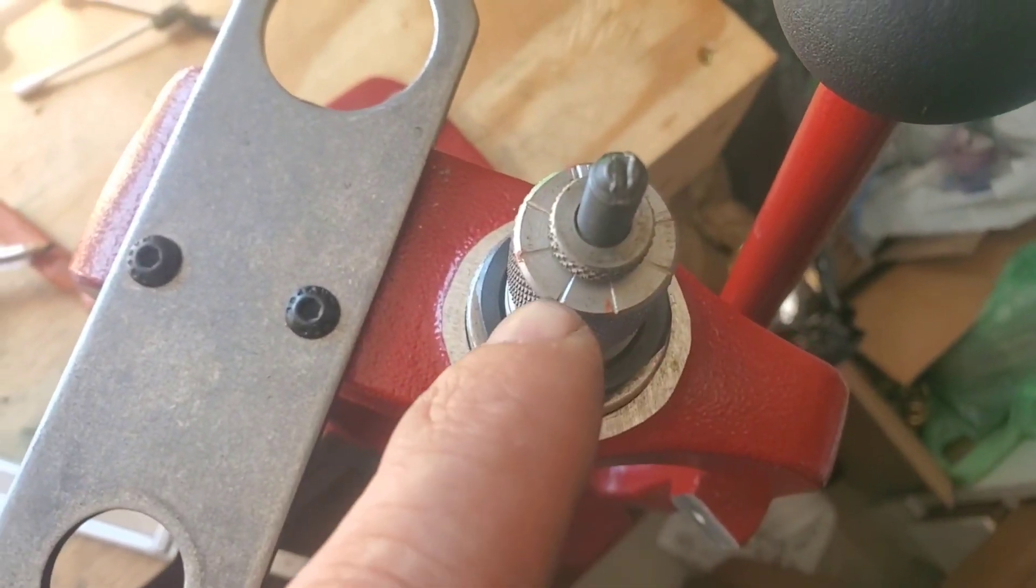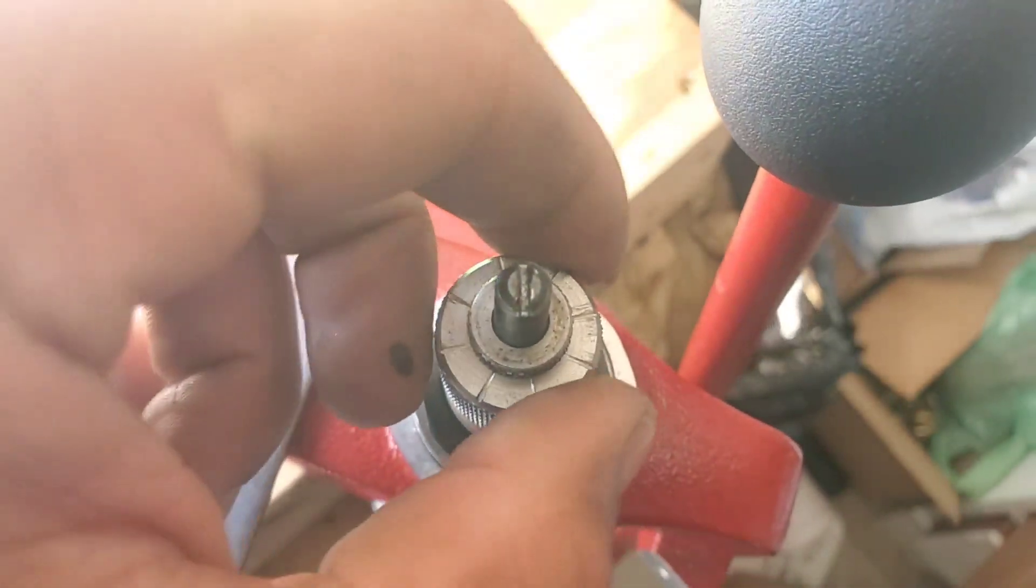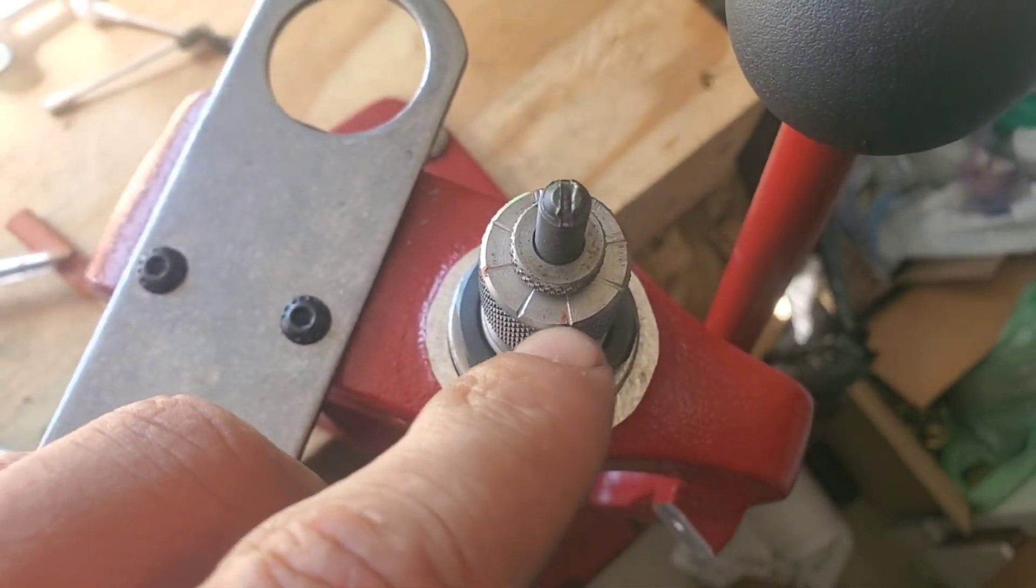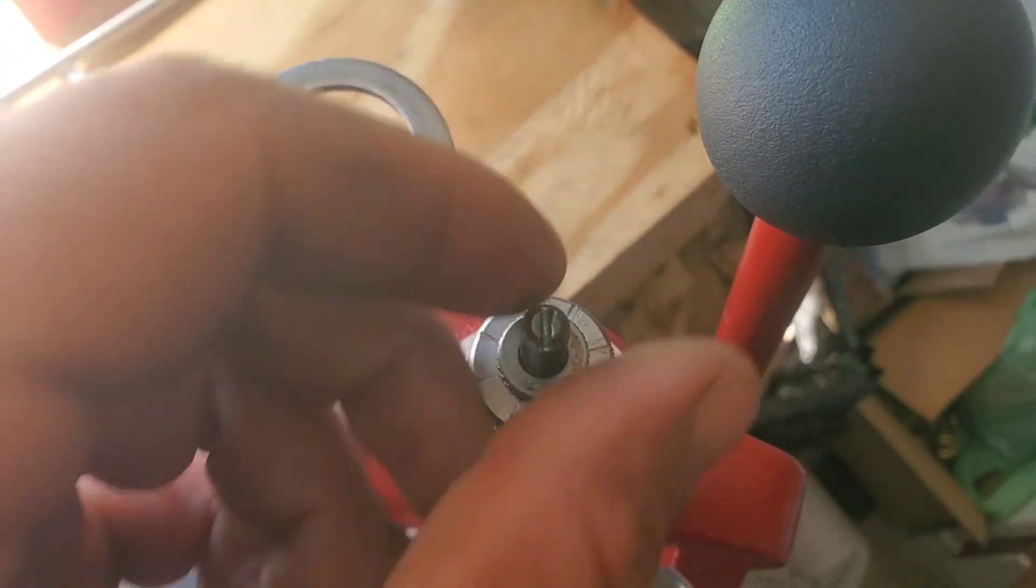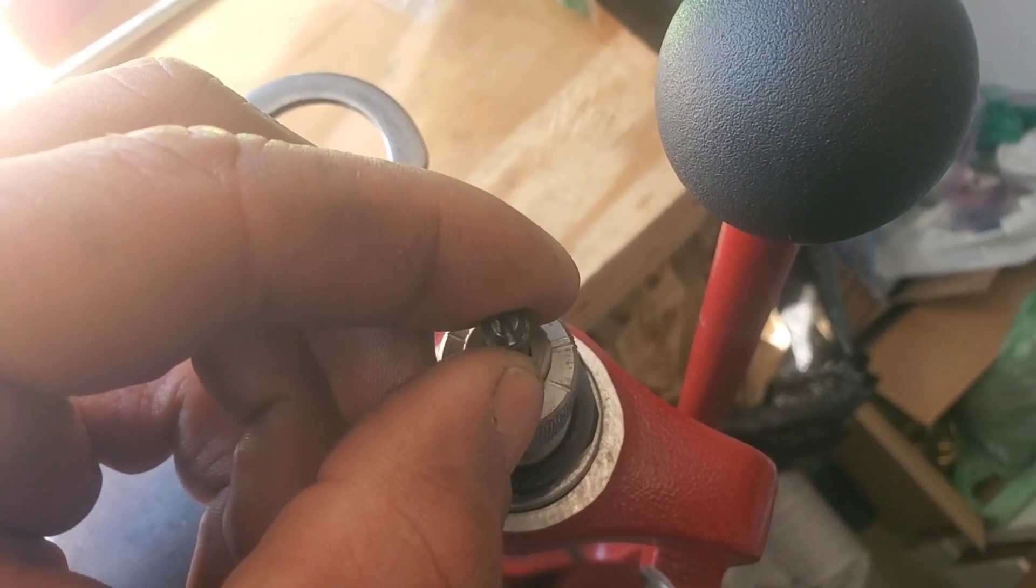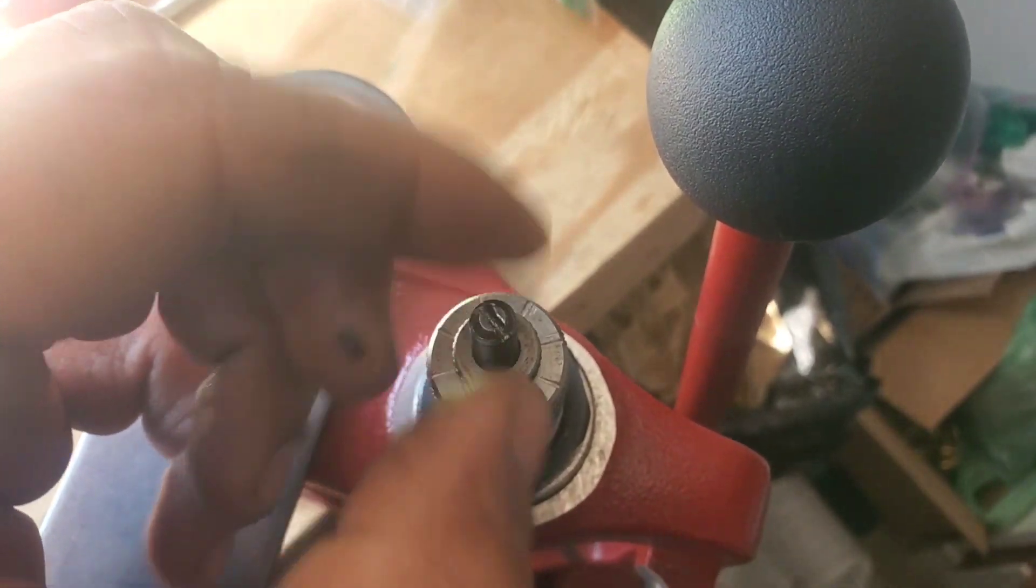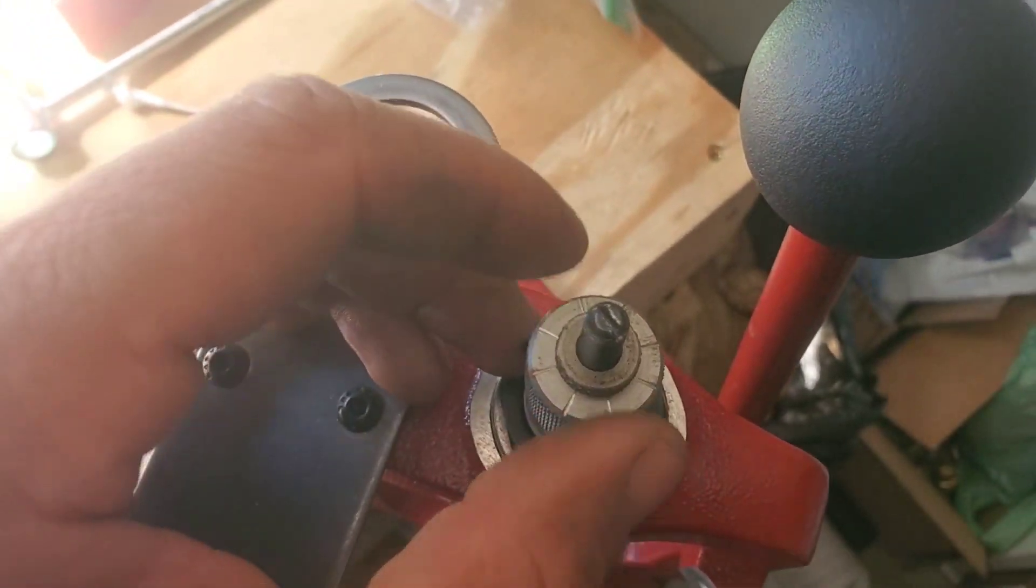And what I've done is I've done seating depth in increments. I've carved these hash marks into my seating die so that it's basically a micrometer. It's pretty much 5 thousandths per hash mark, 20 thousandths per half turn, and 40 thousandths per full turn. So I just kind of incrementalized it.